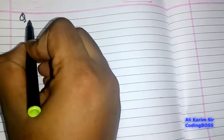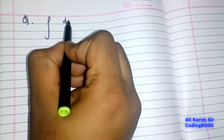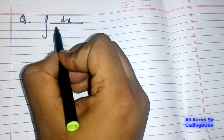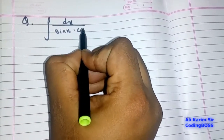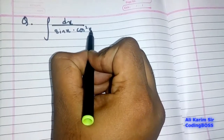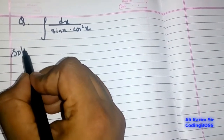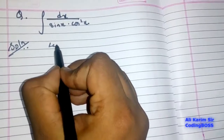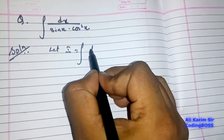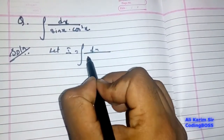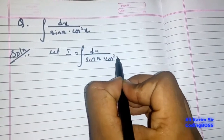The next question we are going to solve today is the integration of dx upon sin x into cos squared x. So let I equal to the integration of dx upon sin x into cos squared x.